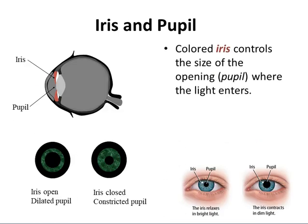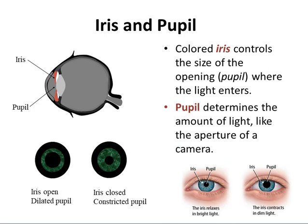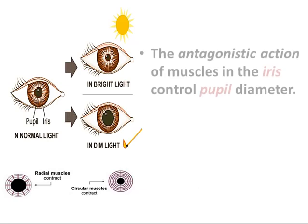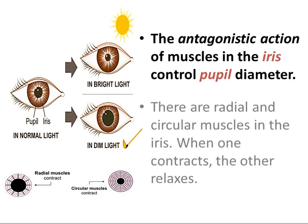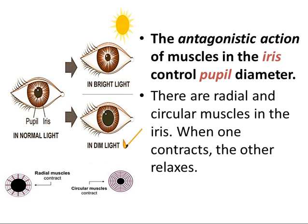The colored iris controls the size of the opening of the pupil where light enters. The pupil determines the amount of light, like the aperture of a camera. The iris relaxes in bright light whereas the iris contracts in dim light. When the iris is open, the pupil dilates, and when the iris is closed, the pupil constricts. The antagonistic action of the muscles in the iris controls the pupil diameter. There are radial and circular muscles in the iris — when one contracts, the other relaxes.